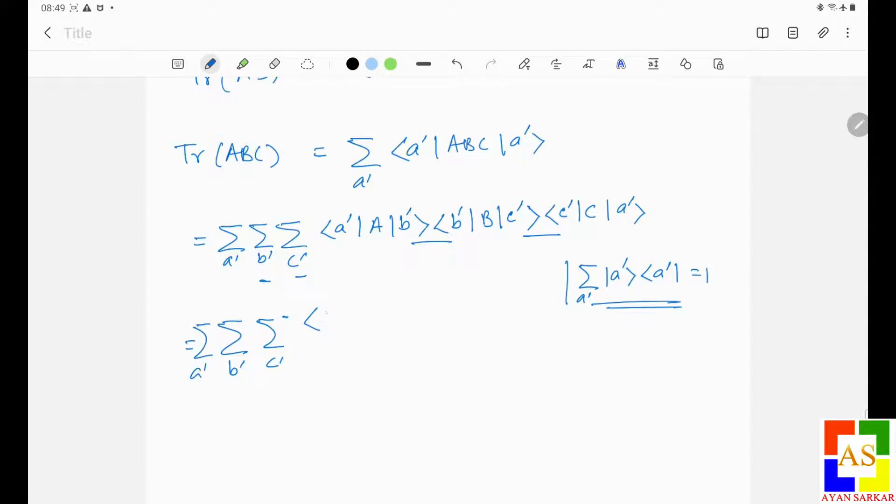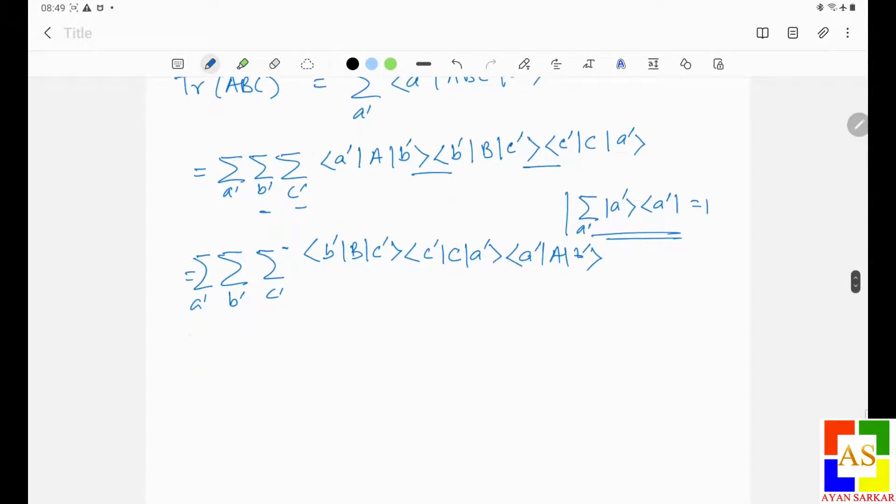Let's write it here. Just one step I am doing. So now this summation, I mean this will give one, so I will remove this summation and write this. So now I am getting CA because with summation this is one.